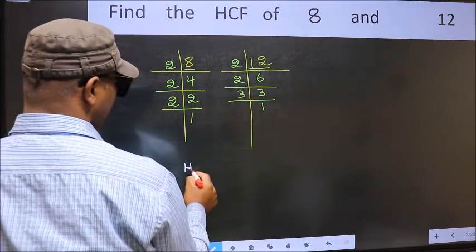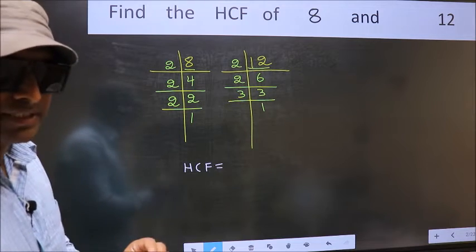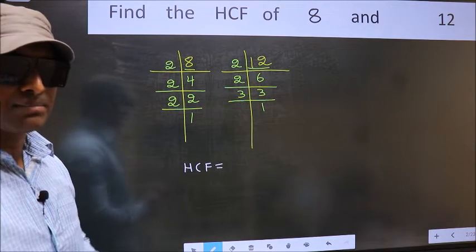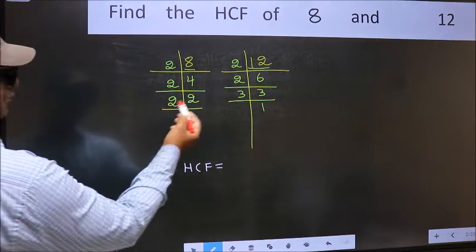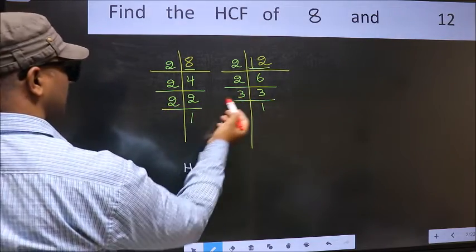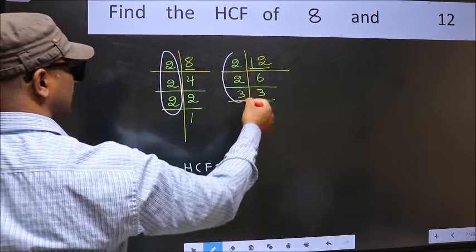Therefore our HCF is the product of the numbers which should be present in these two places. That is here and also here.